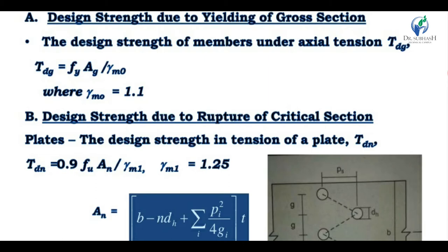Next, we calculate design strength due to rupture of the critical section, also given in the same clause, page 32 of IS 800. The cross-sectional area after deduction of bolt holes is referred to as the net area. Holes in a member cause stress concentration at service load. From the theory of elasticity, the tensile stress at a hole will be about 2 to 3 times the average stress of the net area.